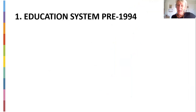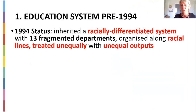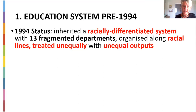Let's go before 1994. Some of you weren't even born at that stage — your generation of the 2000s coming through. Before our first democratic election, what was the state of education in South Africa? We had a racially differentiated system of education with 13 different departments, which were fragmented, didn't work together at all, arranged along racial lines, with unequal treatment of funding and unequal outputs. We had a department of education for the whites, for the Indians, for the coloreds, for the blacks — all totally different. Our students are still emerging out of this whole Bantu education, which happened from 1943.